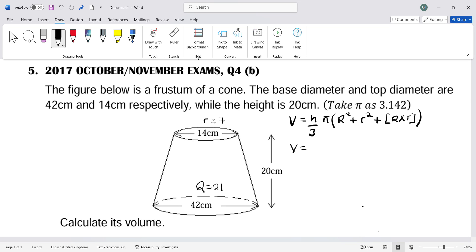Volume equals the height, which is 20, over 3, times π, which is 3.142, times the bracket: 21 squared plus 7 squared plus 21 times 7. So V = (20/3) × 3.142 × (21² + 7² + 21×7). Now I'll work out everything inside the brackets.